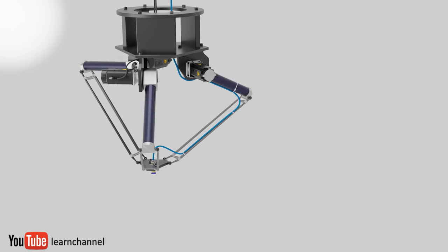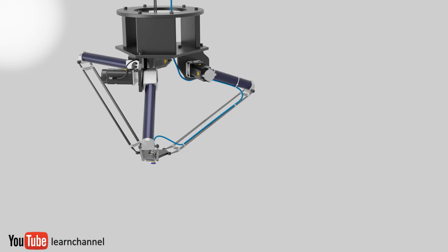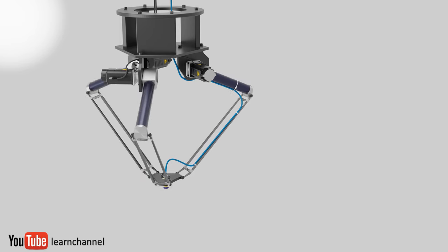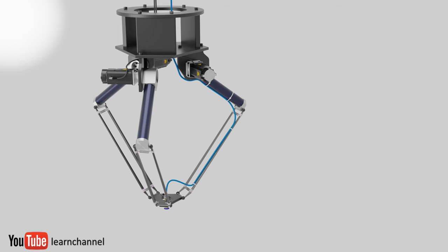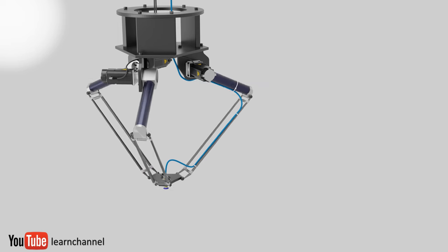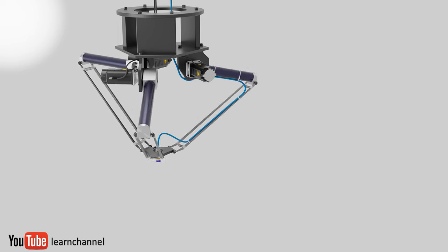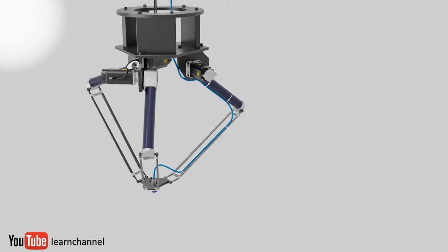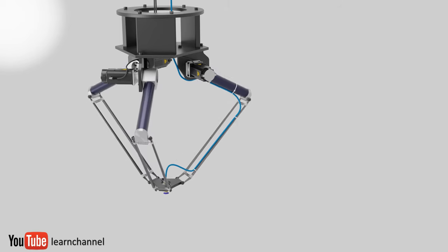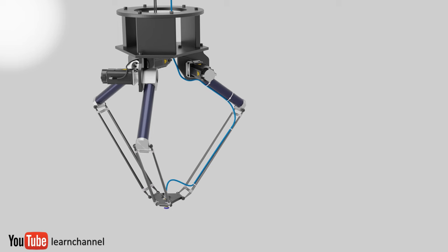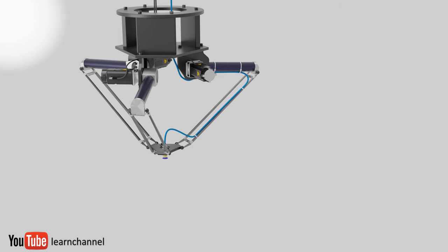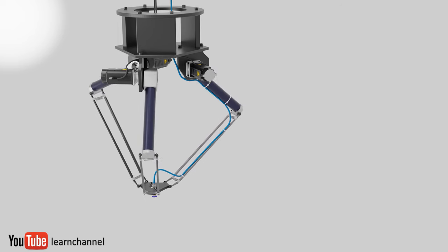Delta robots have three axes and a hexapod robot has six axes. All axes must move in a coordinated manner to move the tool to a specific working point. Parallel robots have a decisive advantage because the masses of the following links do not have to be carried. High dynamics and precision are possible.